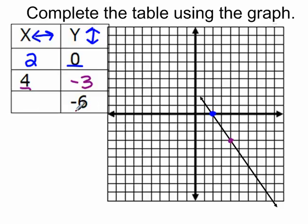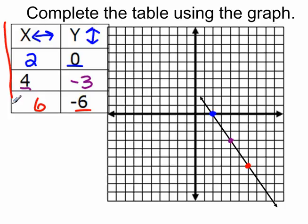In this last row we're given the y-coordinate and we're asked to find the x-coordinate. Starting at the origin we're going to move six spaces down because it's negative — one, two, three, four, five, six. Somewhere along this line we want to find where the function crosses, which would be right here. Our horizontal movement away from the axis would be six spaces, and it's to the right, so that's going to be a positive six. And that should complete your table.